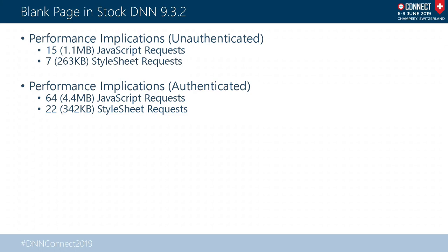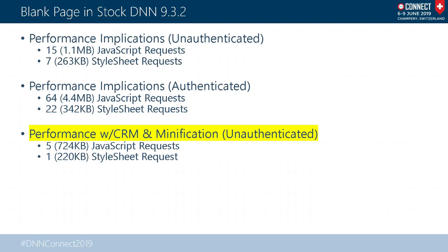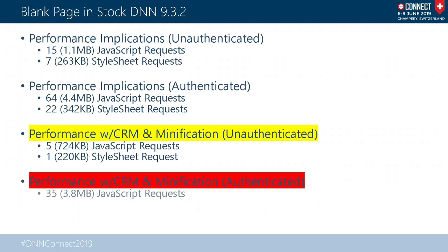This is all fine if your SaaS project doesn't require people to log in as admin. But if you're giving admin capability, this is a big performance downside that should be addressed. If you just turn CRM — Client Resource Management — on with minification, from 22 requests we're down to 6 requests. Less than a megabyte. But when you're logged in, you've still got about 43 requests and close to 4 megabytes, so still a lot of room for improvement.